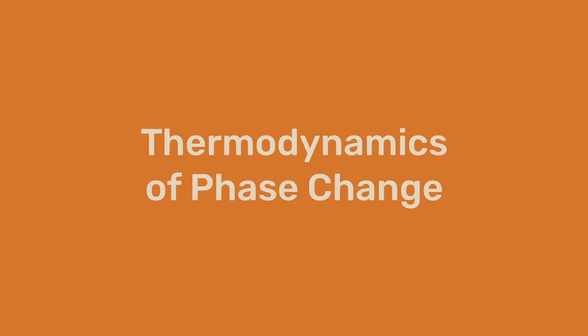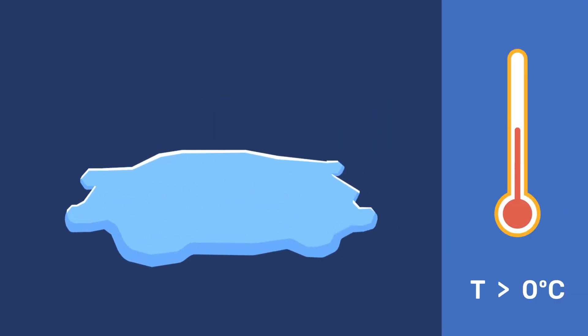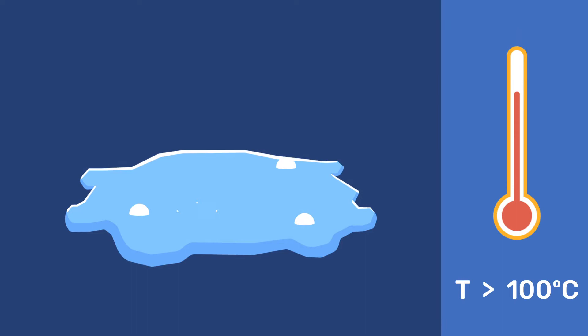In this video, we apply thermodynamics to phase changes. One example of a phase change is a cube of ice melting at room temperature. Another one is boiling of water above 100 degrees Celsius.